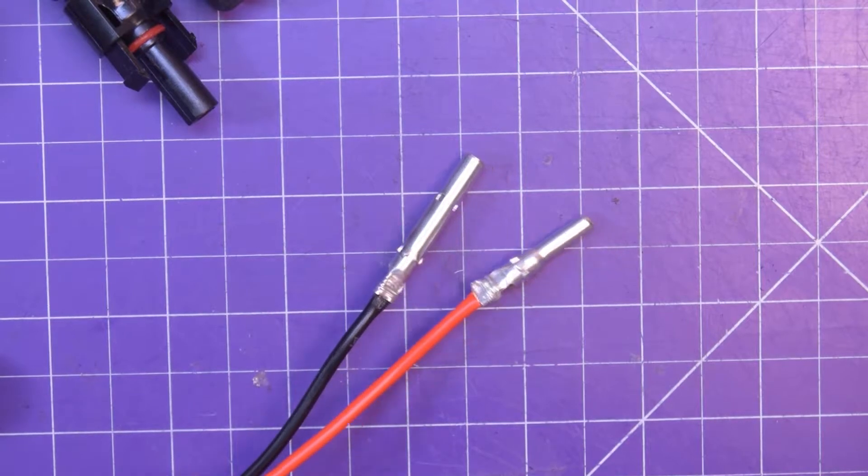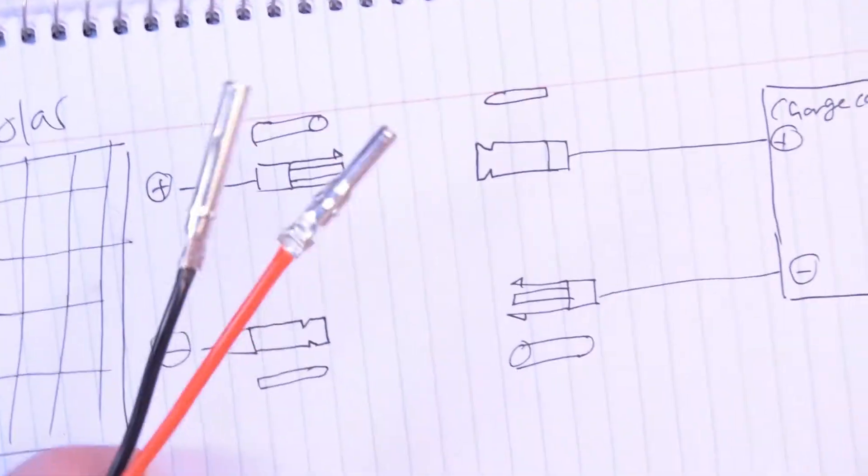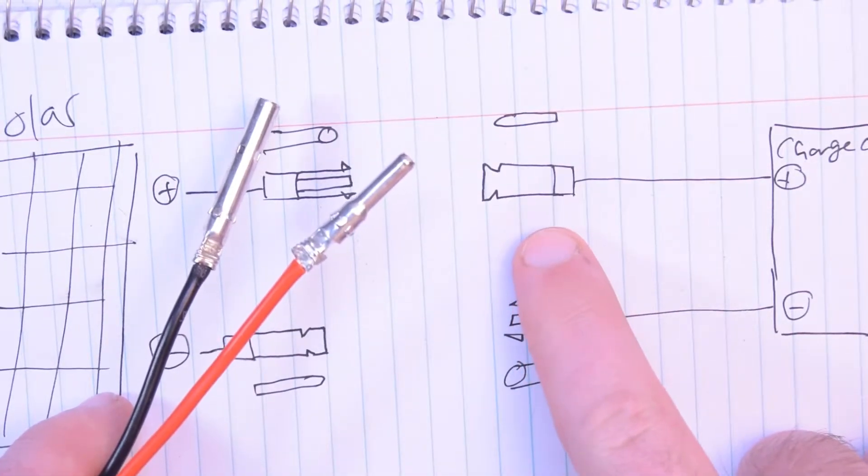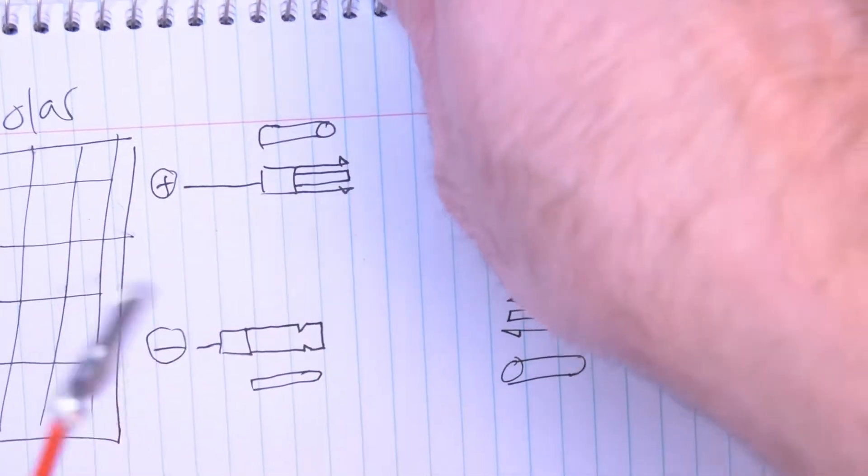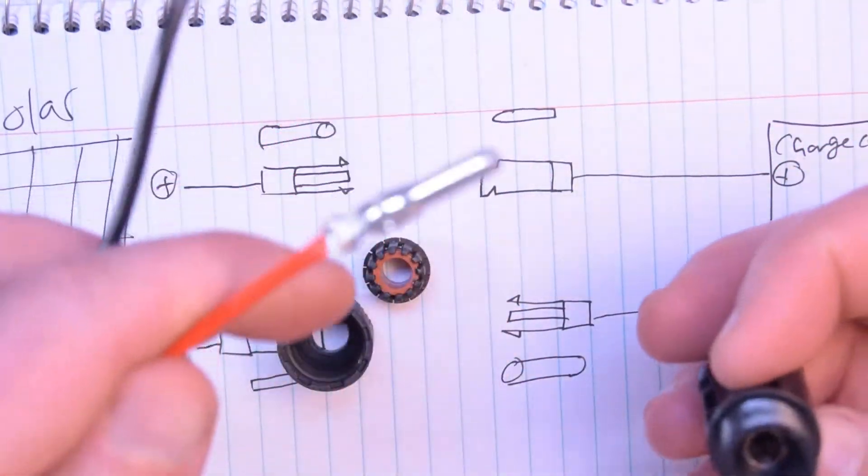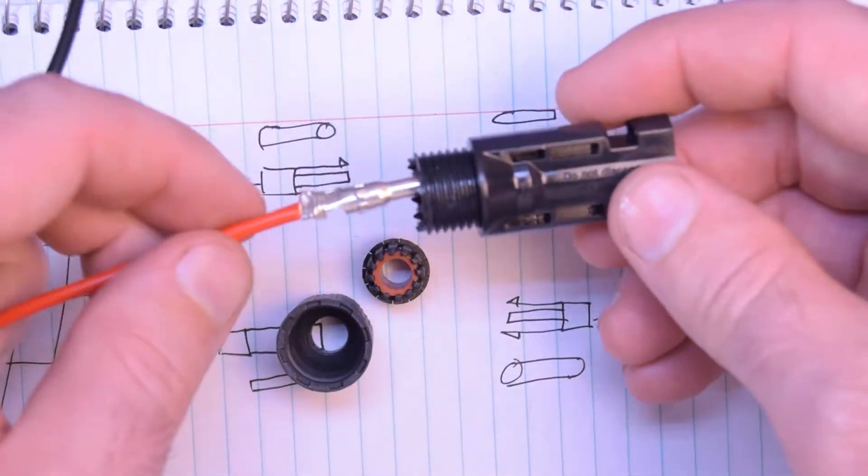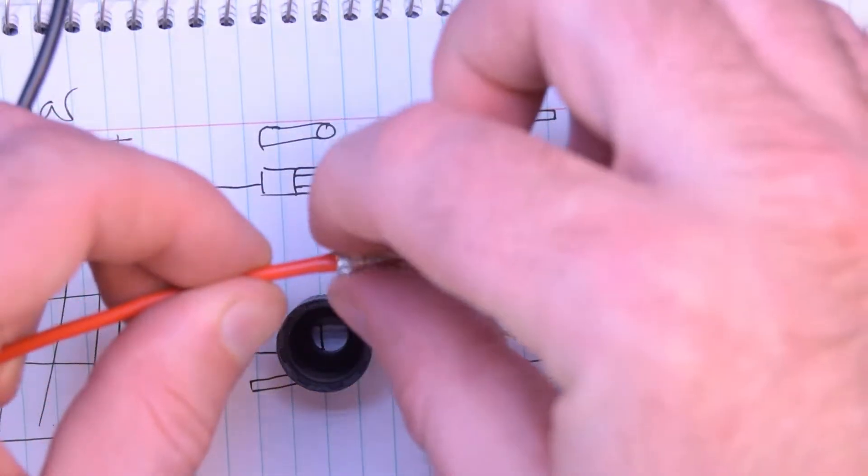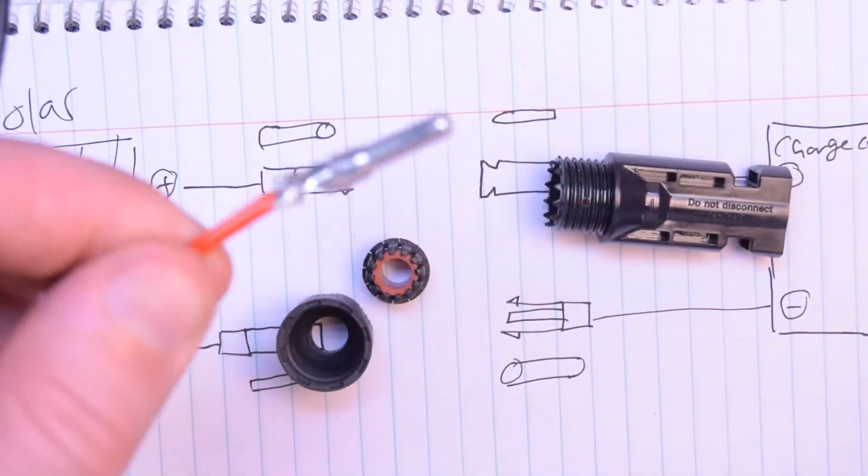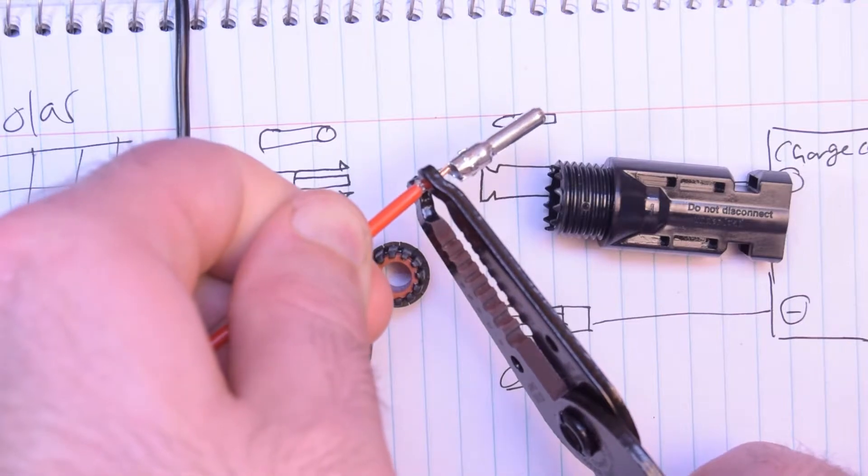Got my ugly crimps done. And now all I need to do is add the casings. And if you can see, the positive needs this square casing here. I'm going to pull this apart. Now, this should just slide right in there and go in with an audible click. I can see that this is a bit wide here. Maybe I will just give this a touch of modification.